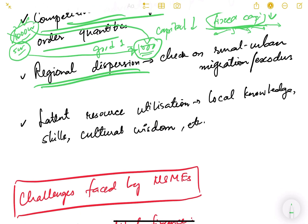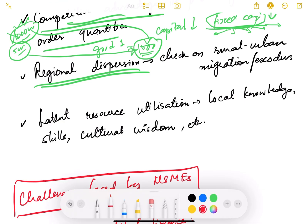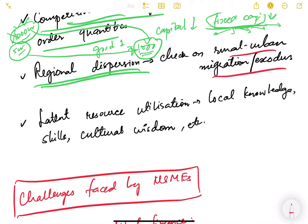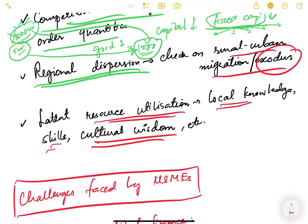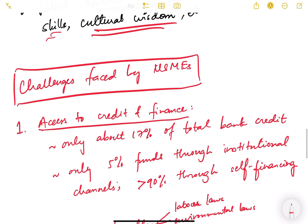MSMEs are dispersed across various regions, which helps check rural-urban migration. People are less likely to move to urban areas without meaningful jobs because good employment is now available in rural and semi-urban areas. MSMEs also enable latent resource utilization — using local knowledge, skills, and cultural wisdom to produce new and innovative products.